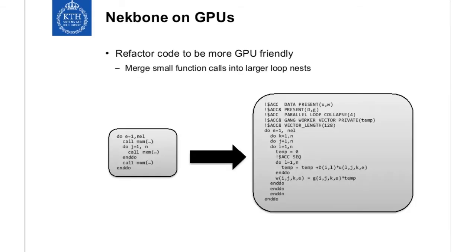The AX kernel needed more work. We had this long loop with very small function calls — too little work per call to make good use of the GPU. The initial work done in the Cresta project in 2014 addressed this by merging the small function calls into larger loops. Basically, you collapse all the top four loops and vectorize over them, with a small sequential loop in the middle for the matrix-matrix transformation. Overall, you have much more to vectorize over.